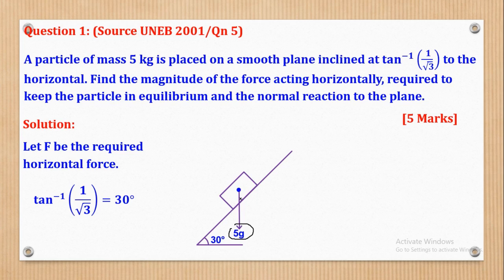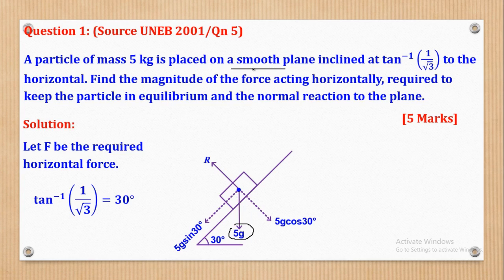The component of this weight parallel to the plane will be 5G sin 30, and the component perpendicular to the plane will be 5G cos 30. The normal reaction will be capital R. The plane is smooth, implying there is no friction resistance, so we have to put a horizontal force to keep the particle in equilibrium.